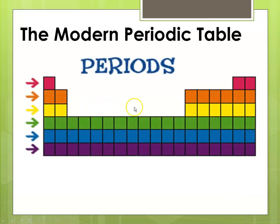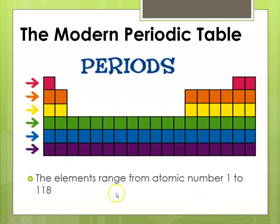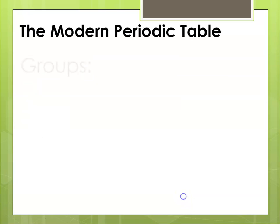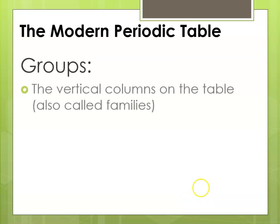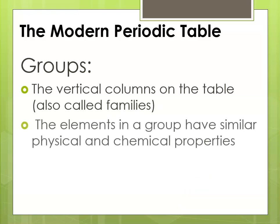The periods are these horizontal rows, and the elements range at this point from roughly atomic number 1 to 118. Then we have the groups, which are the vertical columns, also known as families. The elements in a group have similar physical and chemical properties. Recall that the vertical columns, the groups, all end in the same electron configuration.